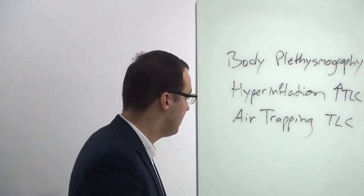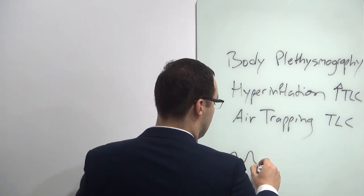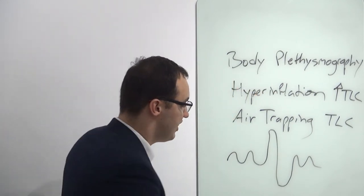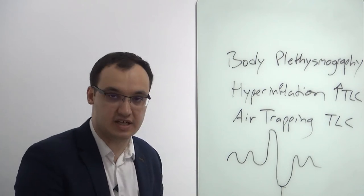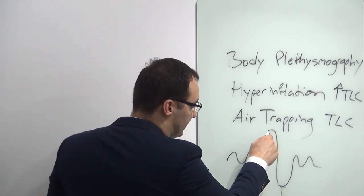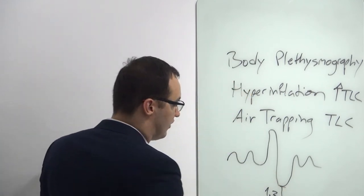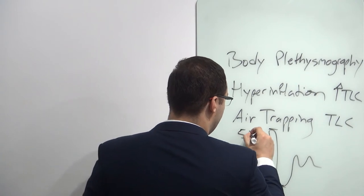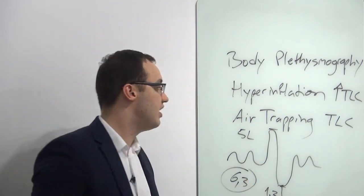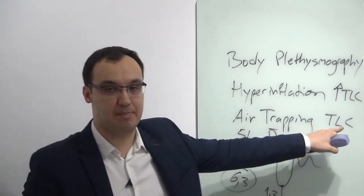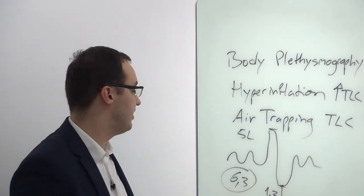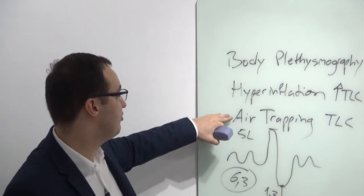Total lung capacity means the tidal volume, plus inspiratory capacity, plus expiratory capacity, plus the residual volume. The residual volume is the air that remains after total expiration — still exists in the lungs. If you add up all of this, the residual volume is around 1.3 liters, and the vital capacity is around 5 liters, so the total lung capacity is around 6.3 liters. In air trapping this value stays the same, and in hyperinflation it increases — for example to 6.5 or 6.6 — and that's how we differentiate between these two things.